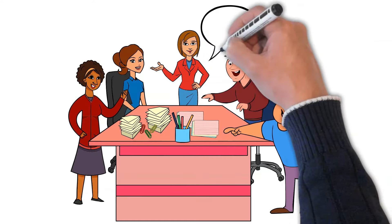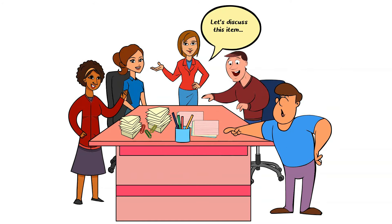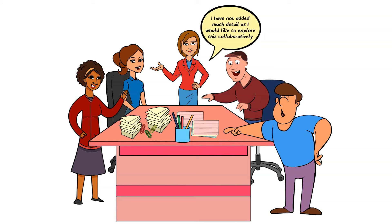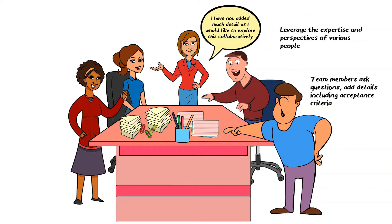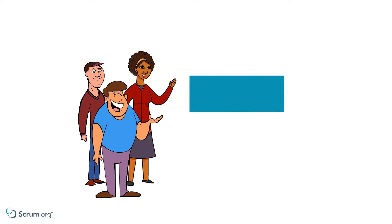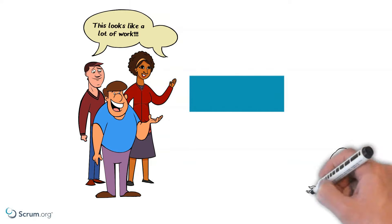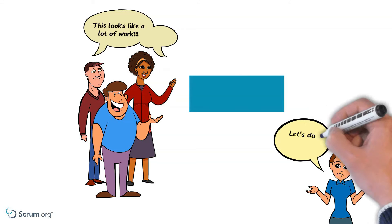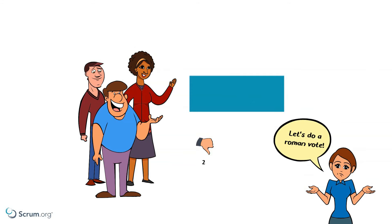Next, the team looks at a Product Backlog item that was added at the last sprint review and placed high upon the backlog. It has a brief description and some high-level acceptance criteria. Cassie did not want to put too much detail in beforehand, as she believes refinement is a great opportunity to leverage the team's expertise to help her refine this item further. Blake, Nisha and Steve ask Cassie questions, and together they update the Product Backlog item. During the discussion, they quickly come to the conclusion that this Product Backlog item would be a lot of work. Robin asks if the developers think they can start and complete the item in one sprint. They decide to do a Roman vote. Blake and Nisha vote with their thumbs down — they don't think it will fit within one sprint. Steve shows a thumbs up. They briefly discuss the results of the vote, and Steve finds out that he forgot to take a few things into consideration. They all agree the Product Backlog item is too large, and with some help from Cassie, they break it down into smaller items of value and add those to the Product Backlog.